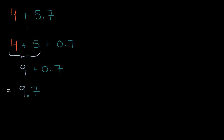Even though in future videos we're going to learn other ways of adding decimals, especially larger, more complicated decimals, this is still how my brain adds four plus 5.7, especially if I need to do it in my head. I say four plus five is nine, and then I have that seven tenths. So it's going to be nine and seven tenths, or 9.7.